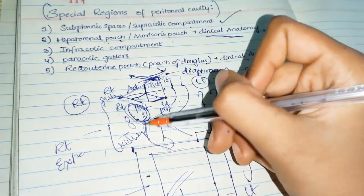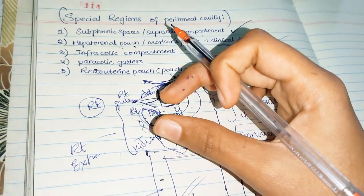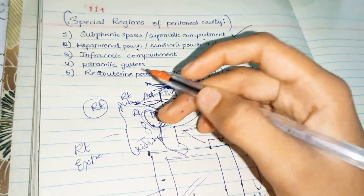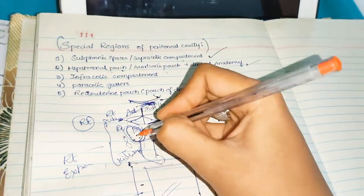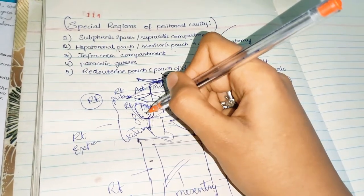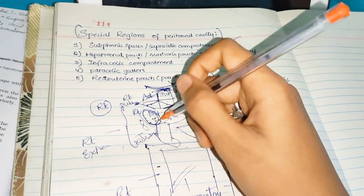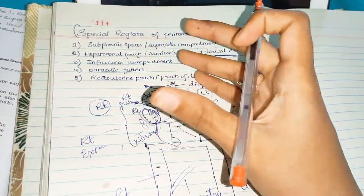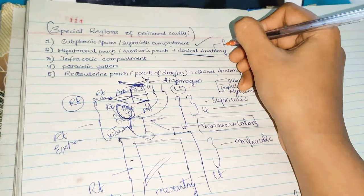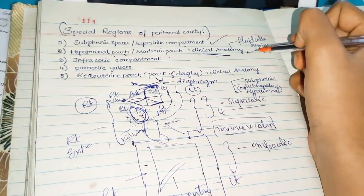The clinical anatomy of the hepatorenal pouch: this space is of considerable importance as it is the most dependent lower part of the abdomen proper when the body is supine. Fluids tend to collect here, and this is a common site of subphrenic abscess, which may be caused by spread of infection from the gallbladder, appendix, or other organs in the region. So the key clinical point is fluid collection in the supine position.